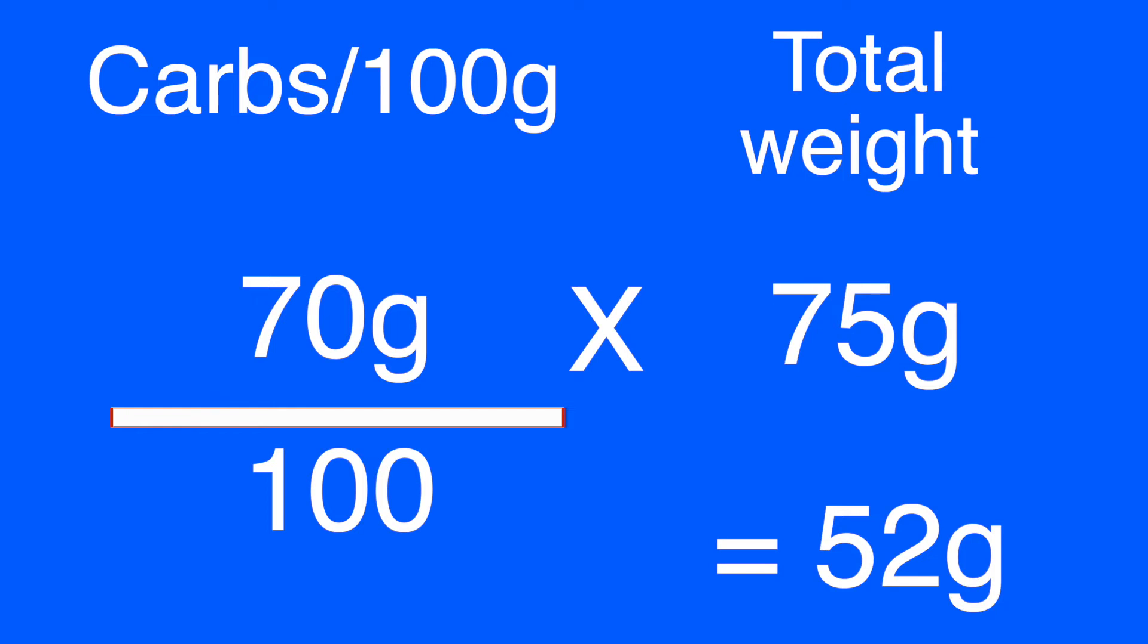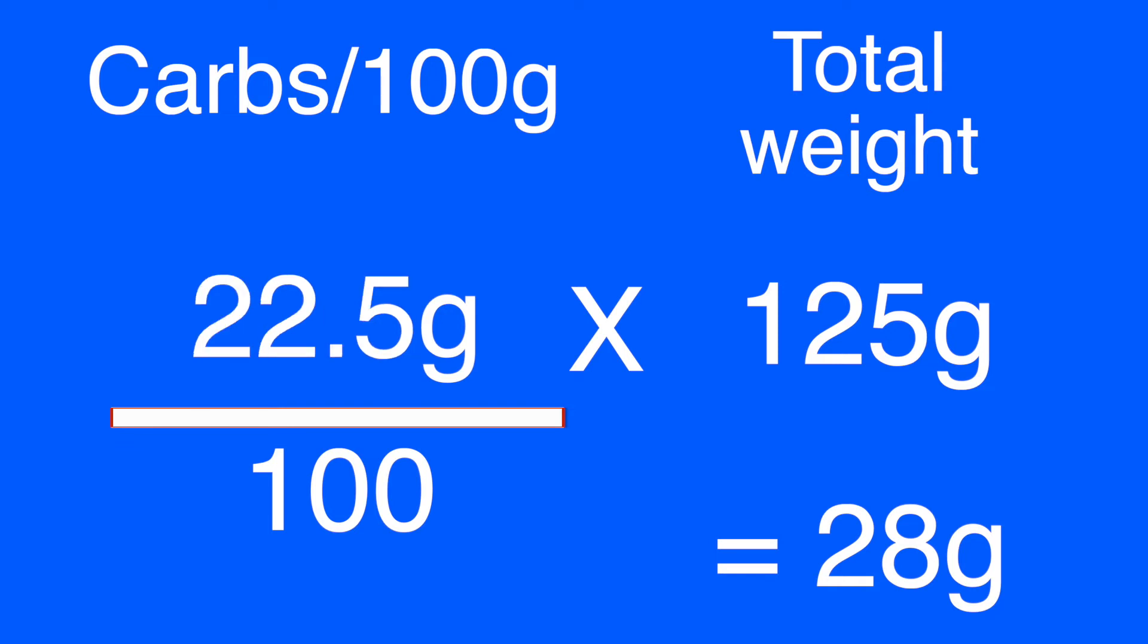So just round it to the nearest 10. So if you weighed out 85 grams then you're going to do for rice 70 grams per 100 divided by 100 times 85. If it was 125 you times by 125. If there's a lower carbohydrate content so potatoes for example about 22.5 then this number is going to change to 22.5 you divide by 100 and you times by your weighed portion.